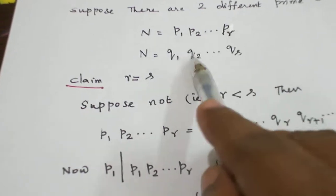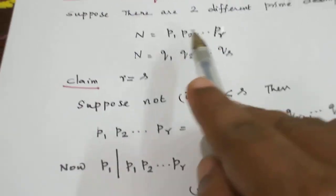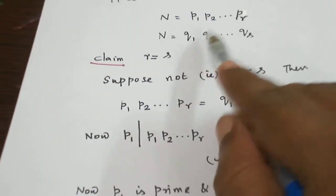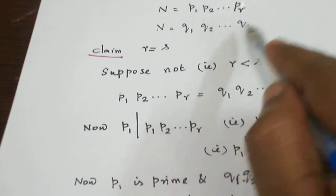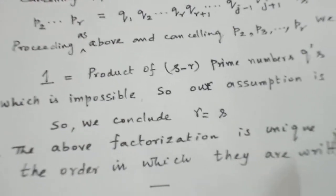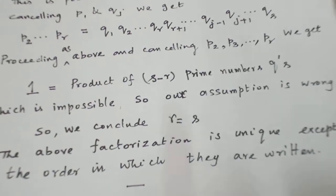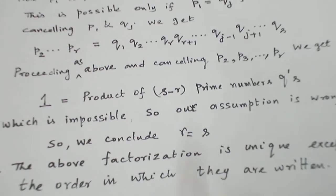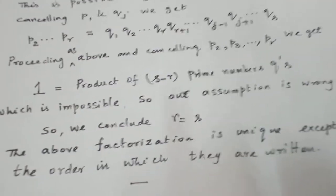So the number of prime numbers must be equal in the factorization. When the number of prime numbers is equal, automatically the prime numbers are also equal in value. So the factorization is unique except for the order in which they are written — p1 may equal some q5 or q6, p2 may equal some qj or qi. The order doesn't matter; the factorization is unique. Same number of primes appear in both factorizations. With this, the proof is complete.